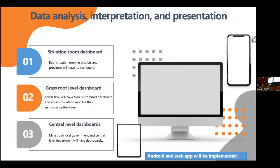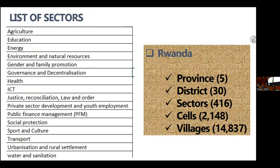We are happy that DHIS2 supports different devices. At the village level, we plan to use normal Android phones — the government has offered Android phones to village heads. At other levels, we'll use laptops and tablets. The indicators are aligned to different sectors: agriculture, education, energy, environmental and natural resources, gender and family promotion, governance and decentralization, health, ICT, and justice.